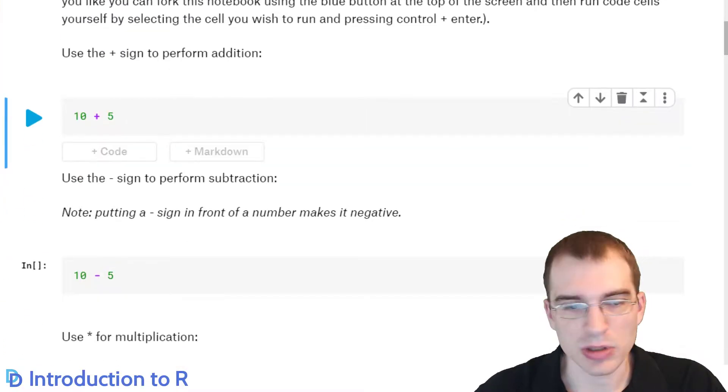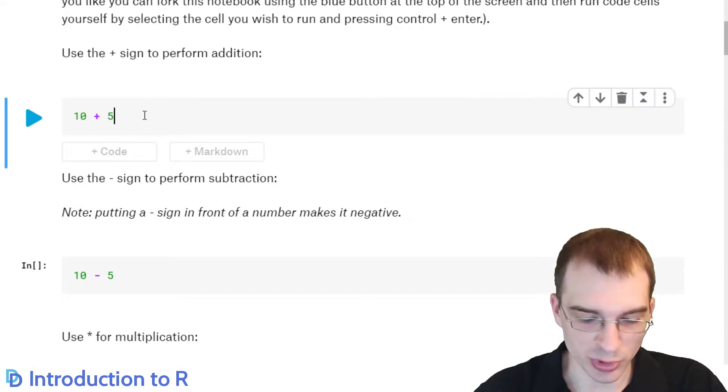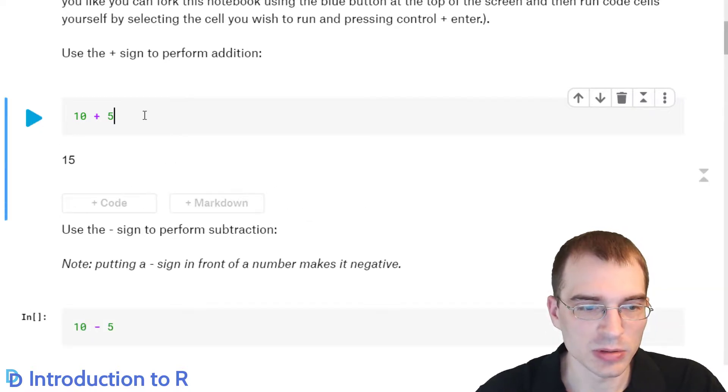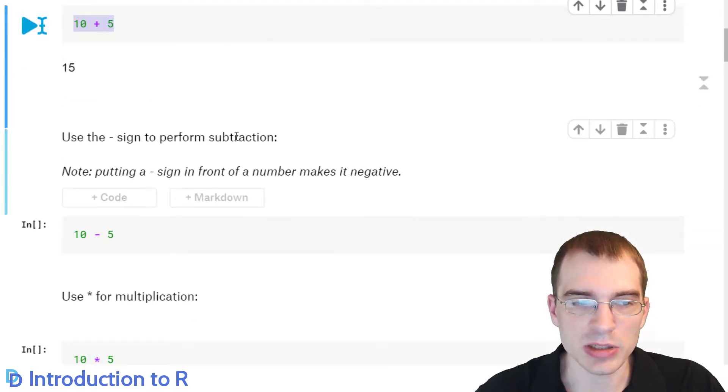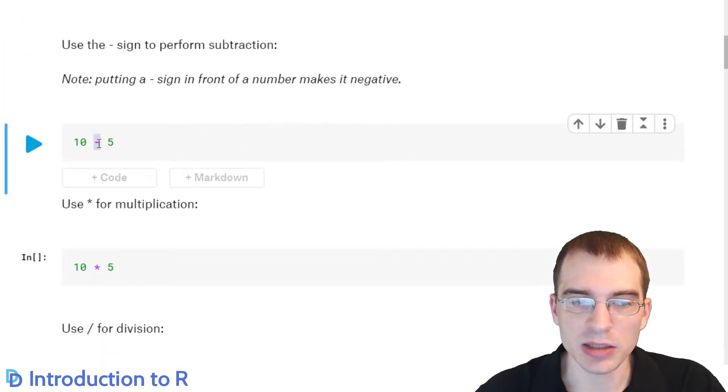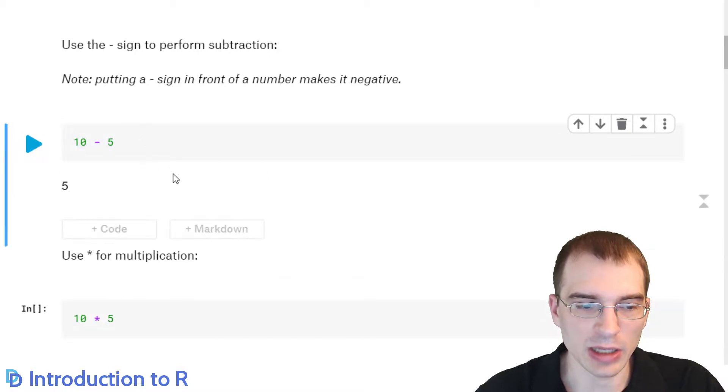You can see in this first code cell here, we have an addition operation. You use the plus sign to do addition in R. So if we run this cell, the output is 15, so the plus just adds two numbers. As you might expect, the minus sign is the subtraction operator, so that will do subtraction. And that is 5.